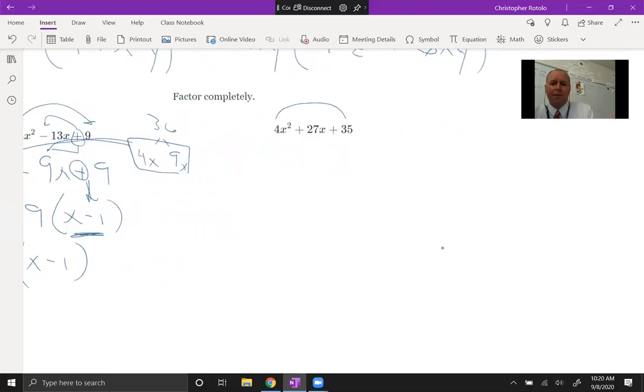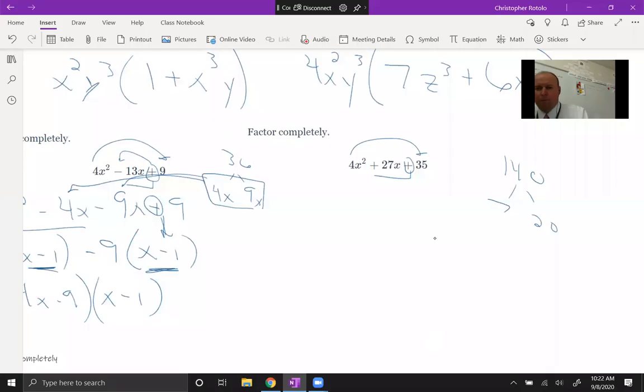Let's see what happens here. We get four times 35, so that's 140, and we want the factors of 140 that add up to 27. So we want to work with seven times 20. Since we want the signs to be the same, they're going to add up to 27. So here we go, four x squared plus seven x plus 20 x plus 35.